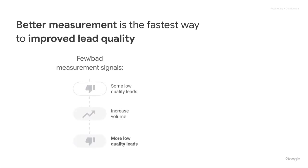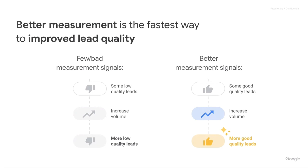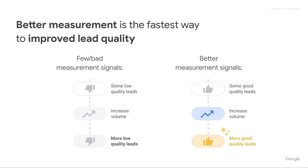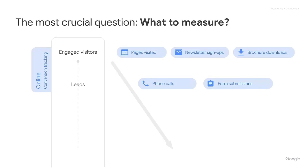Let me give you a quick example of what this looks like. If we had bad measurement signals — for example, we're tracking simply just the leads coming through from our webpage — we have some low quality leads, and then we increase the volume of these low quality leads. What do we end up with? More low quality leads. Now if we look at improving the overall measurement signals, we have some good quality leads and we increase the volume of those. What do we get? We end up with more good quality leads. That's exactly what we're looking to do today.